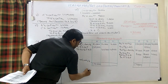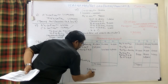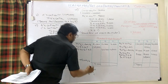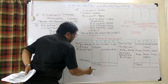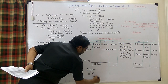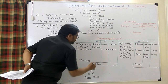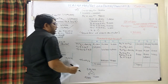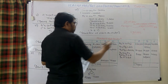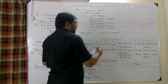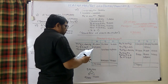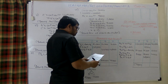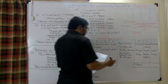A's capital account is now settled. B and C need to maintain a firm capital of 3 lakhs in new ratio 3:1. That means B's capital should be 2,25,000 and C's capital should be 75,000. Checking B's capital account: if the credit side is more, the firm pays B; if the debit side is more, the partner must bring in funds.